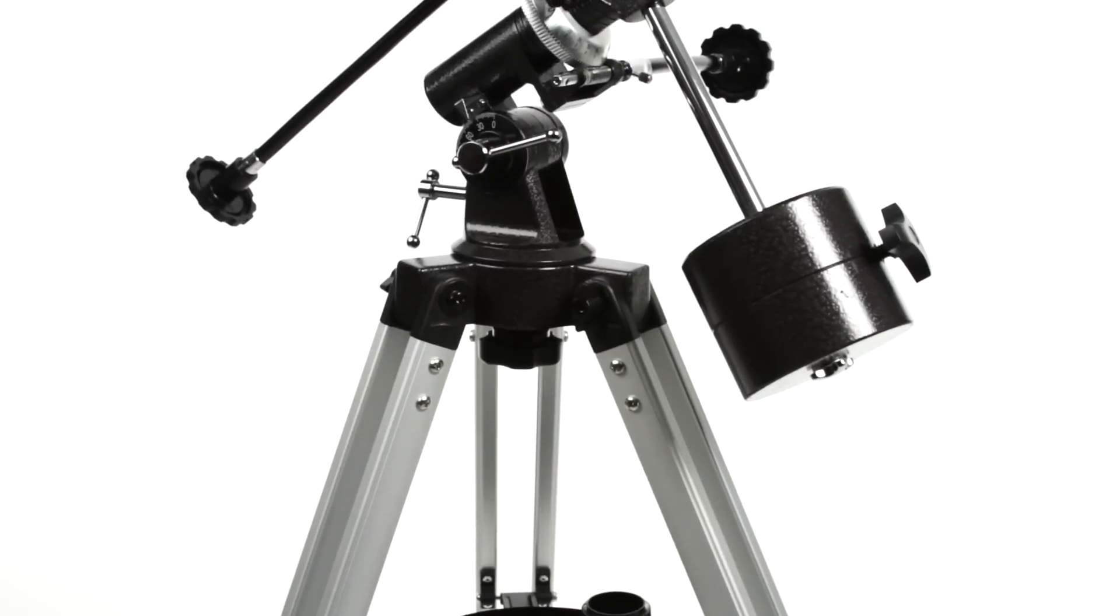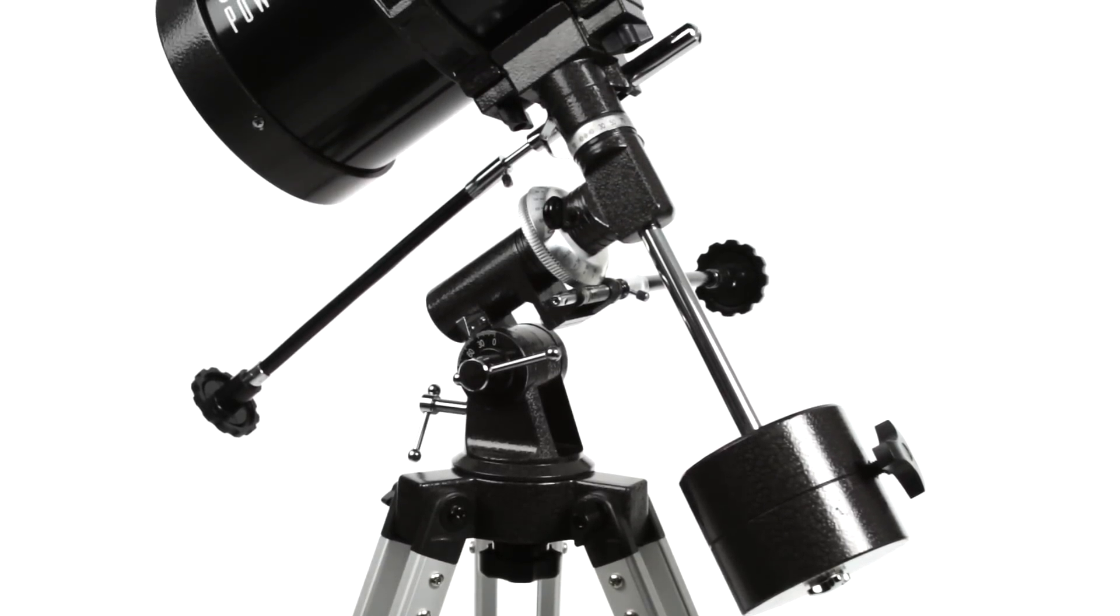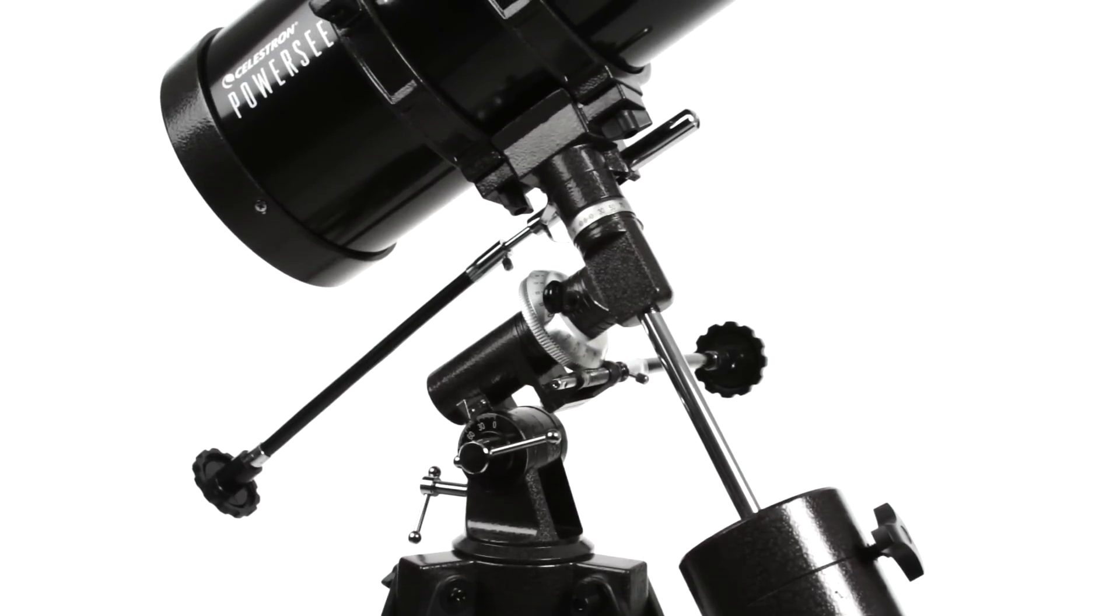The Equatorial Mount is a favorite of amateur astronomers because it makes it easier to track objects as they appear to move across the night sky.